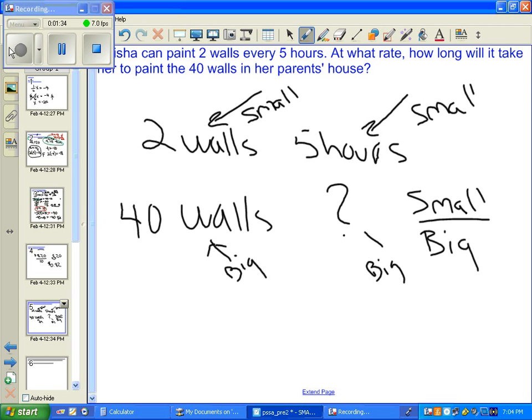Because really, if it takes her five hours to do two walls, it's going to take her a lot longer for 40 walls. So five hours is to two walls as x hours is to 40 walls. How many hours?